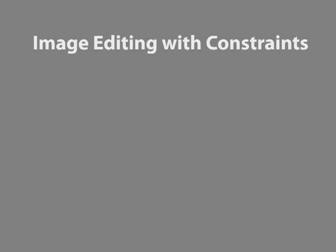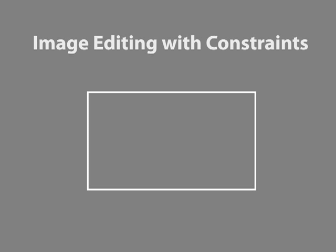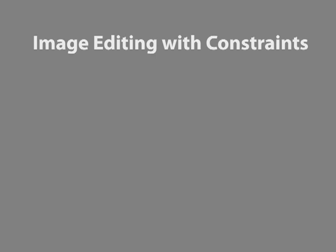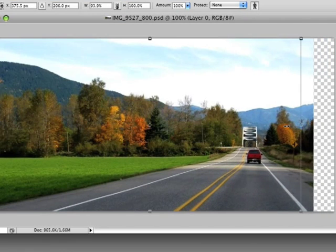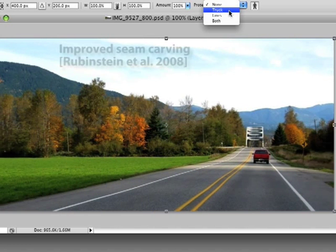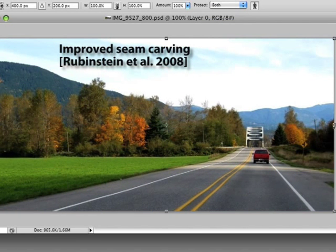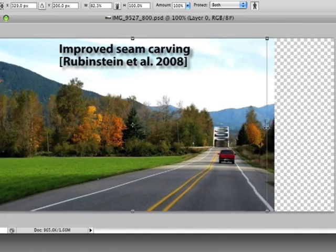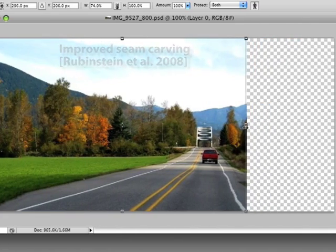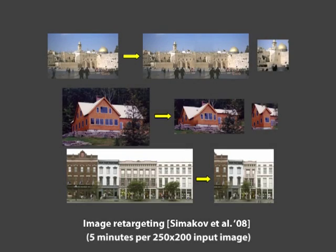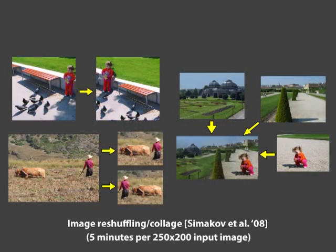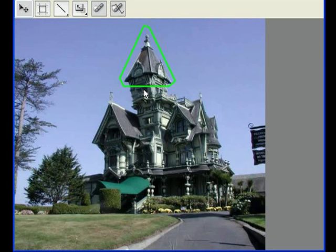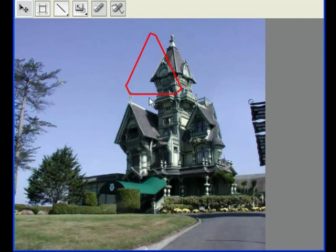Many recent image editing approaches take high-level image constraints as input, for example a change of aspect ratio or in-painting a marked region. Some of these algorithms are interactive, like seam carving, but offer limited control over the results. For example, here we can protect some regions from changing. Other algorithms offer more control, but are too slow and memory-intensive for interactive use. In this work, we present a novel approach to image editing using high-level constraints, like drag-and-drop recomposition of an image as shown here.